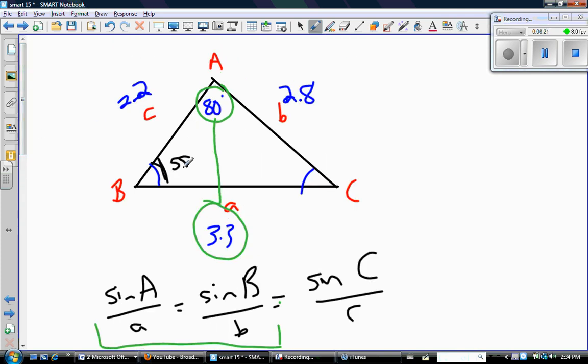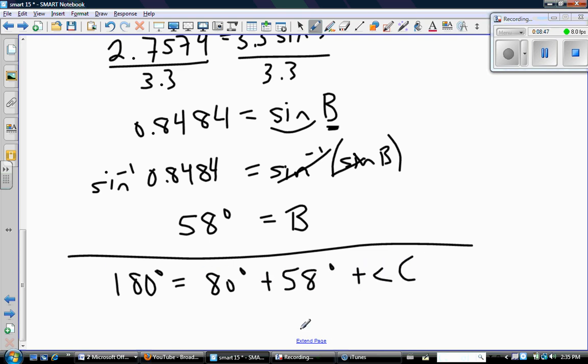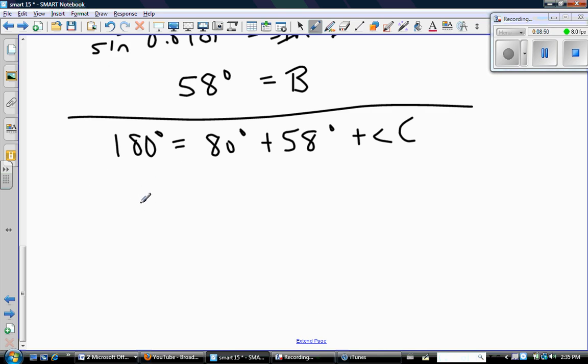So now I know that this is 58 degrees. And to find angle C, you could again use the sine law, right, so this time using sine A over a and sine C over c. But we also know that the angles in a triangle add to 180, so let's just use that fact. So 180 degrees equals 80 degrees plus 58 degrees plus angle C. So doing that math, I get 42 degrees equals C. So there we go.